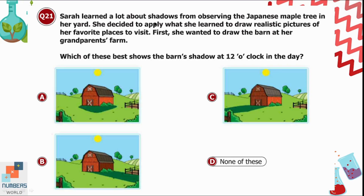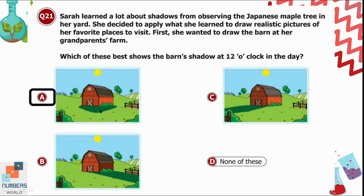Question 21: Sara applied what she learned about shadows to draw realistic pictures of her favorite places. She wanted to draw a barn at her grandparents' farm. Which picture best shows the barn's shadow at 12 o'clock? Shadows are longer in the morning or evening, and around noon shadows are shortest because the sun is directly overhead. Option A is correct — the shadow is smaller when the sun is centered.